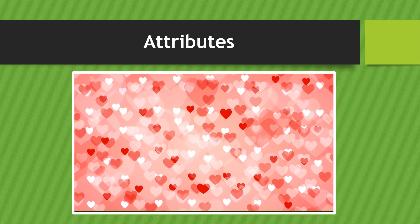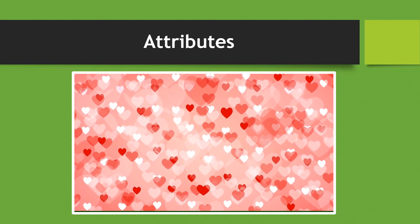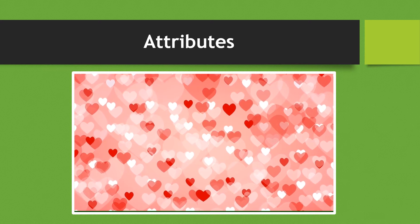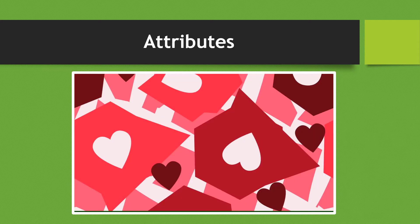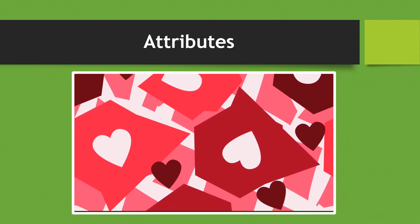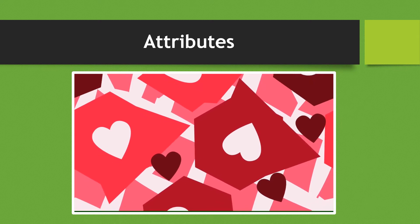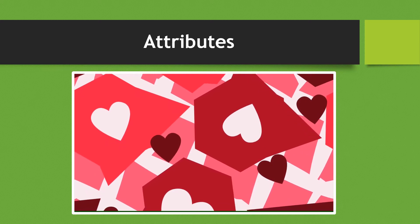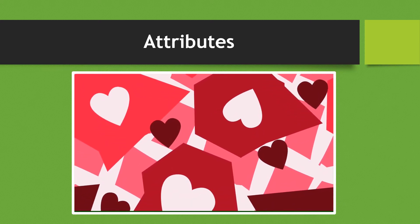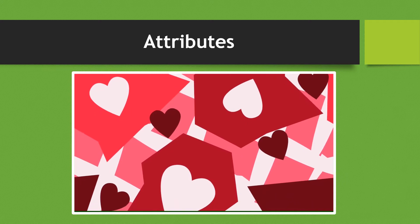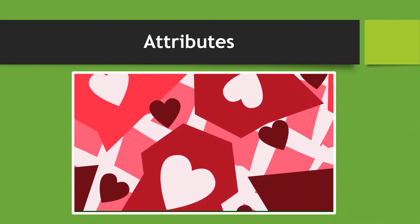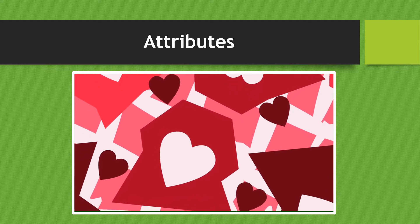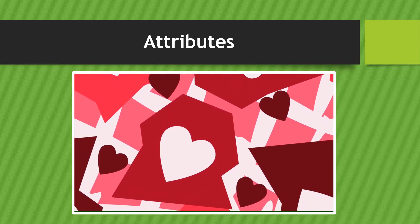Looking at this collection of hearts, there are two different attributes that are changing: the color of the hearts and the size of the hearts. In another collection of hearts, there are also other shapes in the background, making it more complicated. The direction of the hearts is changing — some are upside down, some are right side up — as well as size, shape, and color.